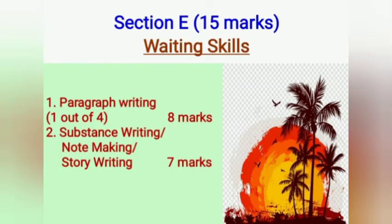The last section is Section E — Writing Skills. From writing skills you will get 15 marks in total. You have to write a paragraph; four to five topics will be given and you will have to write on only one topic, worth eight marks. Next, substance writing, note making, or story writing — any two from these three will be given, but it is optional and you have to attempt only one, worth seven marks.